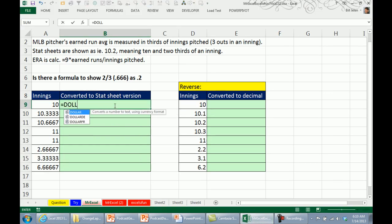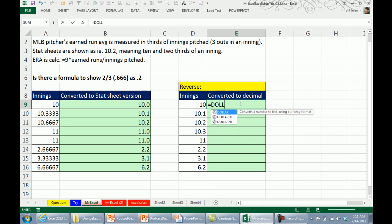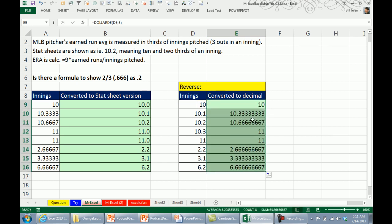And this was created for the stock traders back in the days when stocks were reported in eighths and back then 10.4 meant 10 and four-eighths, not 10 and four-tenths. So here's the number and we want to show it in fractions where each 0.1 is a third. This is unbelievable, a function to solve this exact problem exactly like the person wants it and to go back equal DOLLARDE. That comma and thirds will go back the other way so they had two functions built in that do this exact thing. Now they created it for stock traders but hey, it works for baseball statisticians as well.